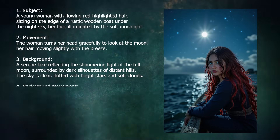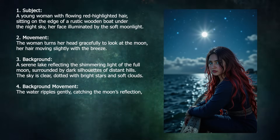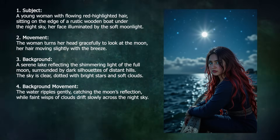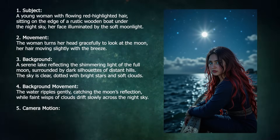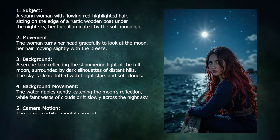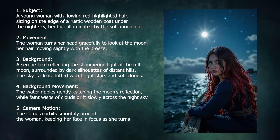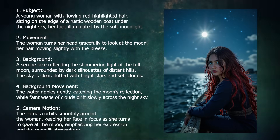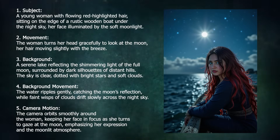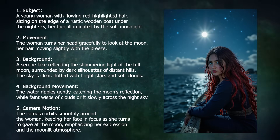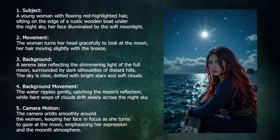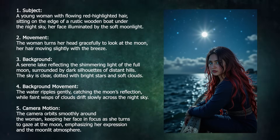The next thing is background movement. So I'll say: the water ripples gently, catching the moon's reflection, while faint wisps of clouds drift slowly across the night sky. And finally, we have to add camera motion. So I'll say: the camera orbits smoothly around the woman, keeping her face in focus as she turns to gaze at the moon, emphasizing her expression in the moonlit atmosphere. So these are the core components of what I want this prompt to consist of.